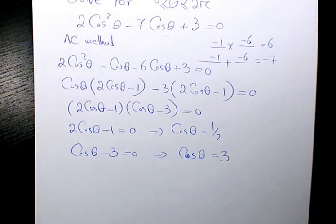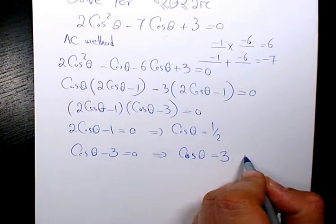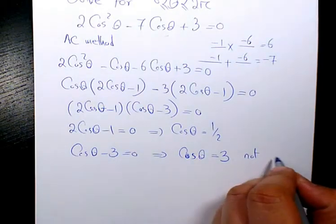So the range for sine theta and cosine theta is negative 1 to positive 1. It means that the value of sine theta and cosine theta cannot be more than 1 and cannot be less than negative 1. So that's why this one, there is no solution. Not possible.